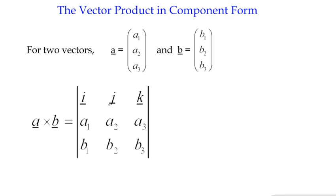We'll explore some of the properties a little bit later, but first of all from a practical sense, how do we calculate the vector product? If we have two vectors in component form, we've got vector a given by its components a1, a2, and a3, and vector b given by its components b1, b2, and b3.